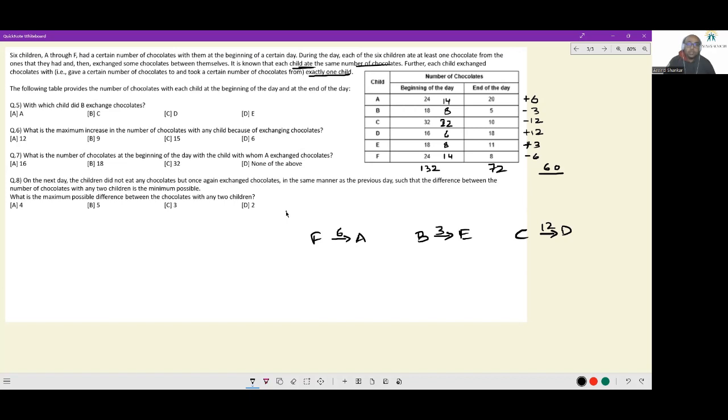With which child did B exchange chocolates? B gave chocolates to E. So D. What is the maximum increase in the number of chocolates with any child because of exchanging chocolates? The maximum increase is C gave away chocolates to D, 12 chocolates.